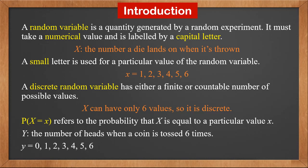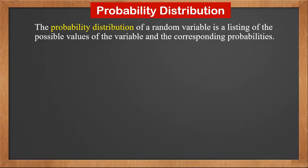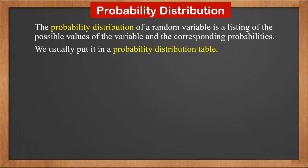Little y could be 0, 1, 2, 3, 4, 5, or 6. The probability distribution of a random variable is a listing of the possible values of the variable and the corresponding probabilities. We usually put it in a probability distribution table.